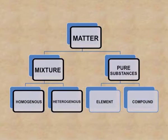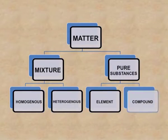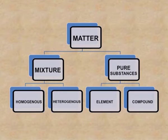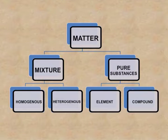Pure substances are further classified into elements and compounds. An element can be monoatomic or polyatomic, but elements are made up of the same type of atoms. A compound is also a pure substance, but it is made up of two or more elements combined in a fixed ratio.